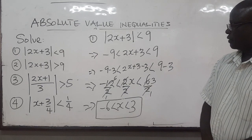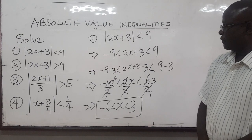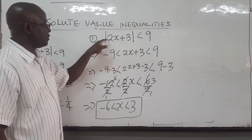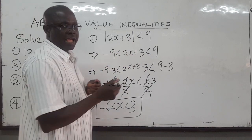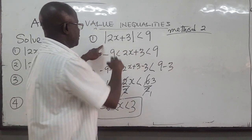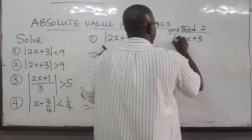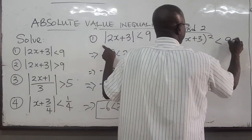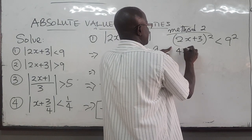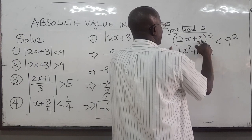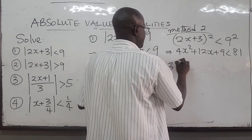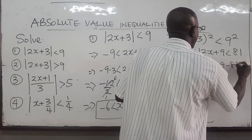That is the solution set for this absolute value inequality. There is another way you can do it — Method 2. Remember, when you square the absolute value you get rid of the symbols. So you square both sides: take 2x plus 3 squared and 9 squared. When you square it, you get rid of the absolute value signs. Expanding gives us 4x squared plus 12x plus 9, and 9 squared is 81.